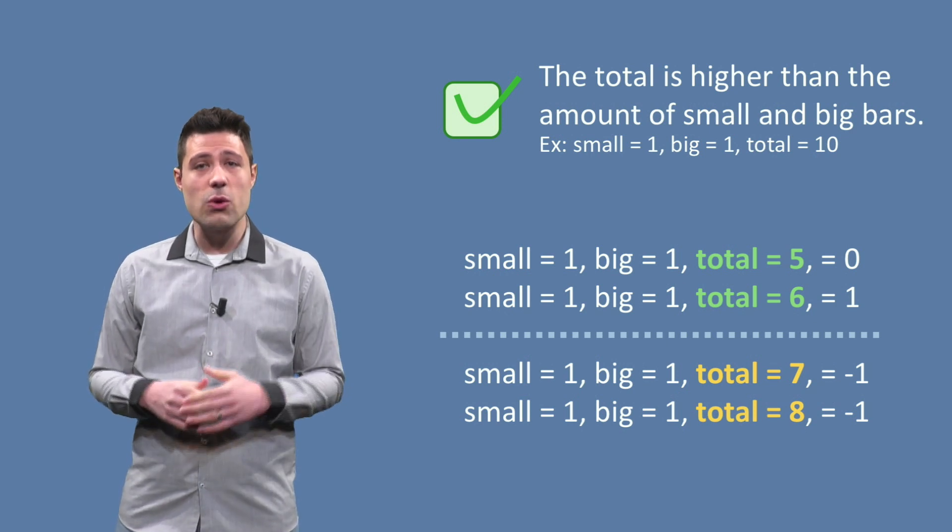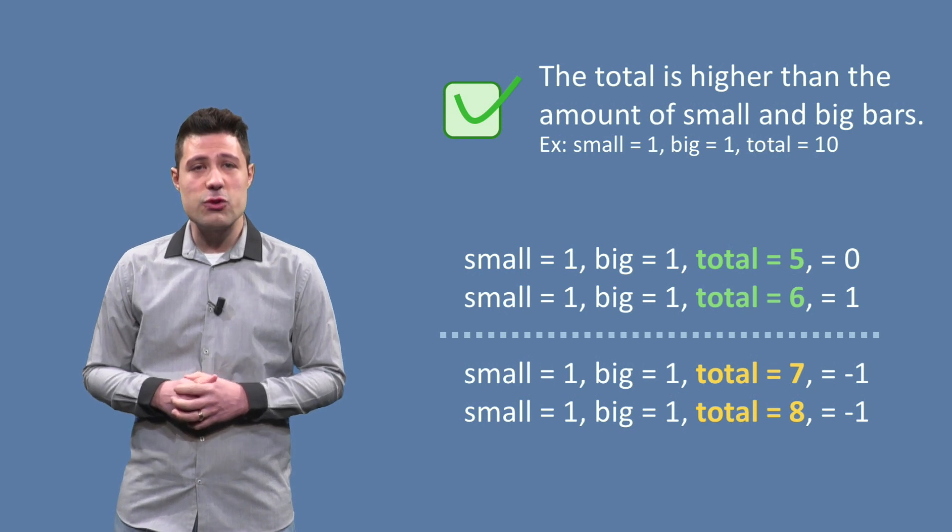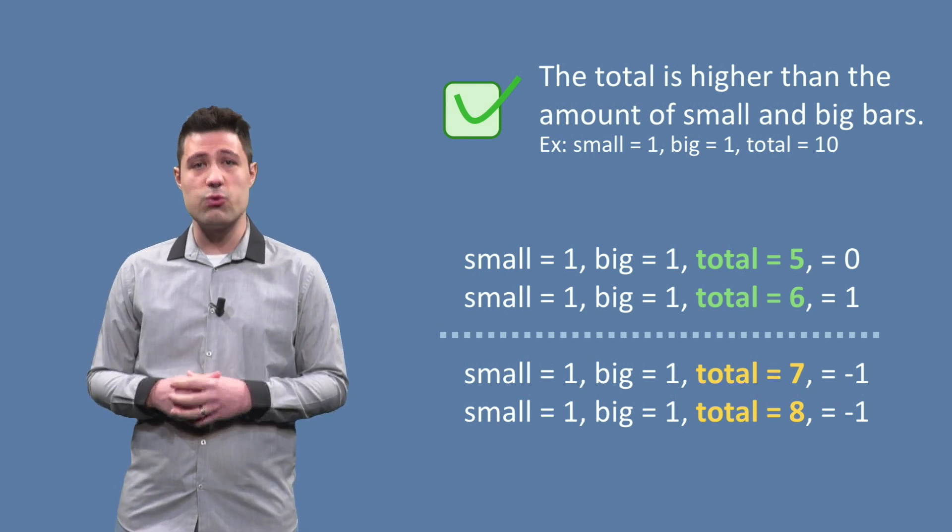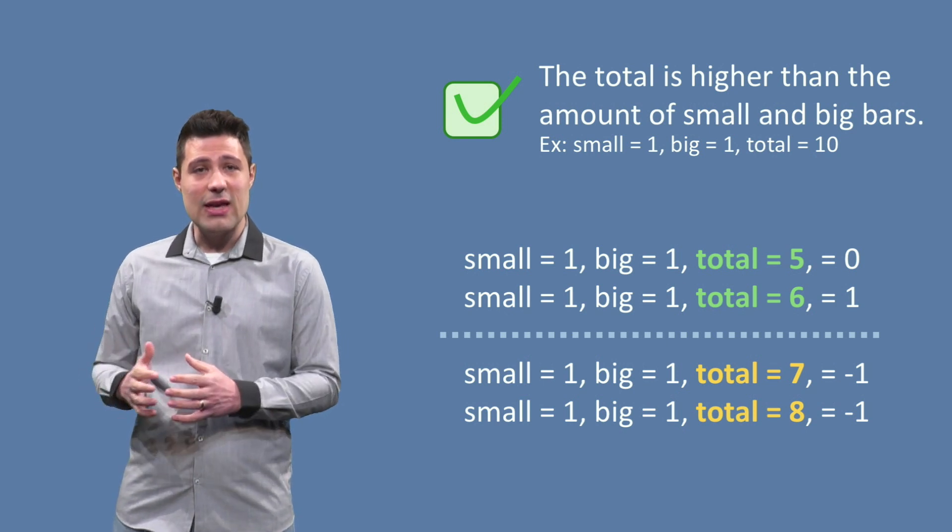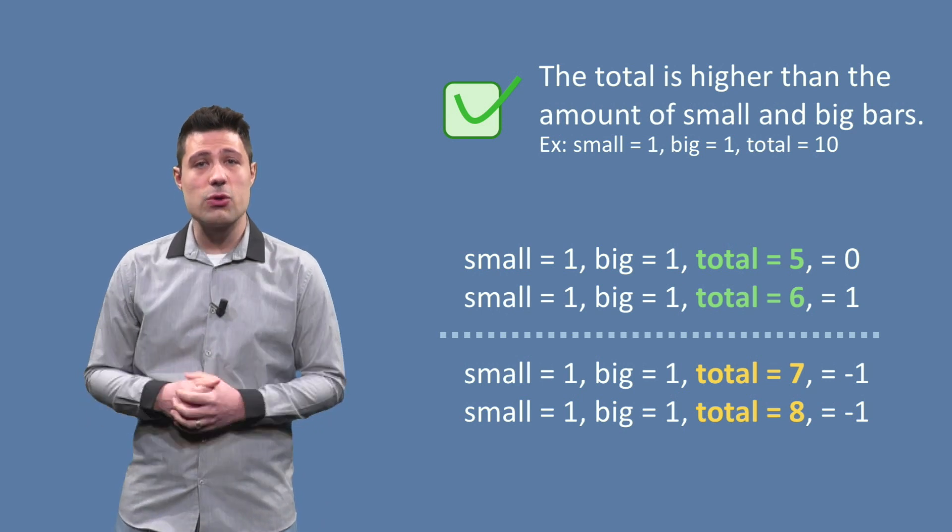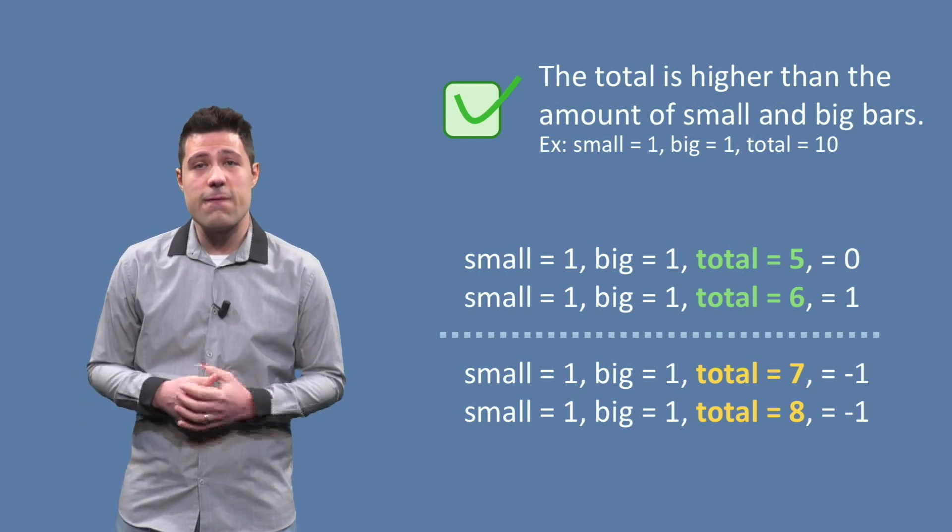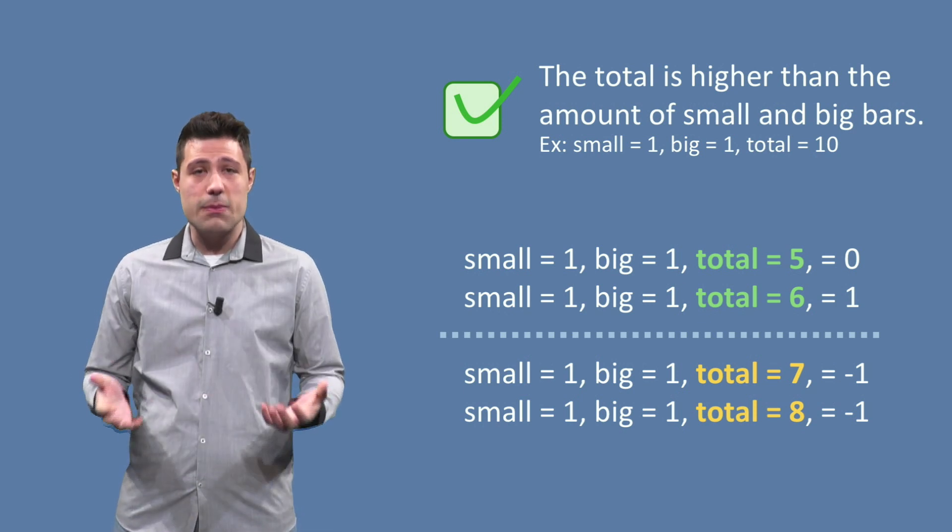We see the boundary when the total is small enough to have a valid solution. If we use small equals 1 and big equals 1 as starting point, we see that total equals 7 is the last input where the total is too high. After that, for total equals 6, 5 until 1, we have a solution. So that is a boundary.